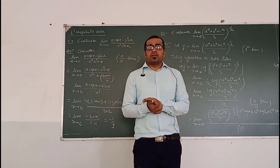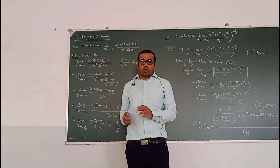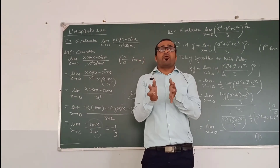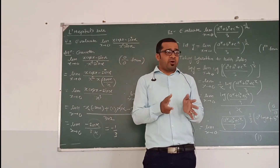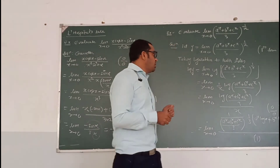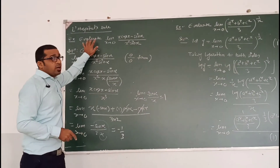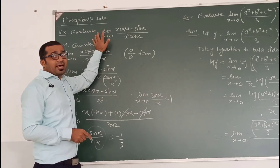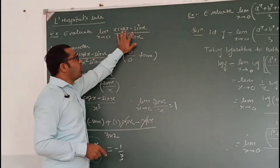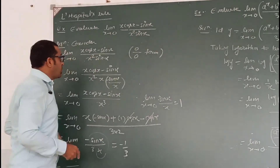Today we are seeing an example on L'Hospital's rule. L'Hospital's rule is used to find out the limit of some particular function which comes into intermediate forms. Let us see the first example: evaluate the limit as x tends to 0 of the function x·cosx minus sinx upon x squared·sinx.